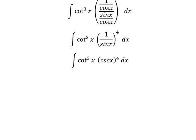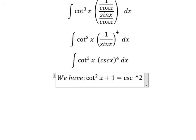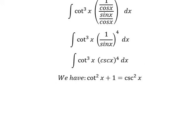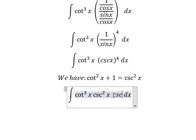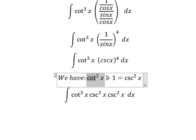Next, we have the formula here. Cot² x plus 1 equals csc² x. So we can write this as cot³ x times (cot² x plus 1) times csc² x.